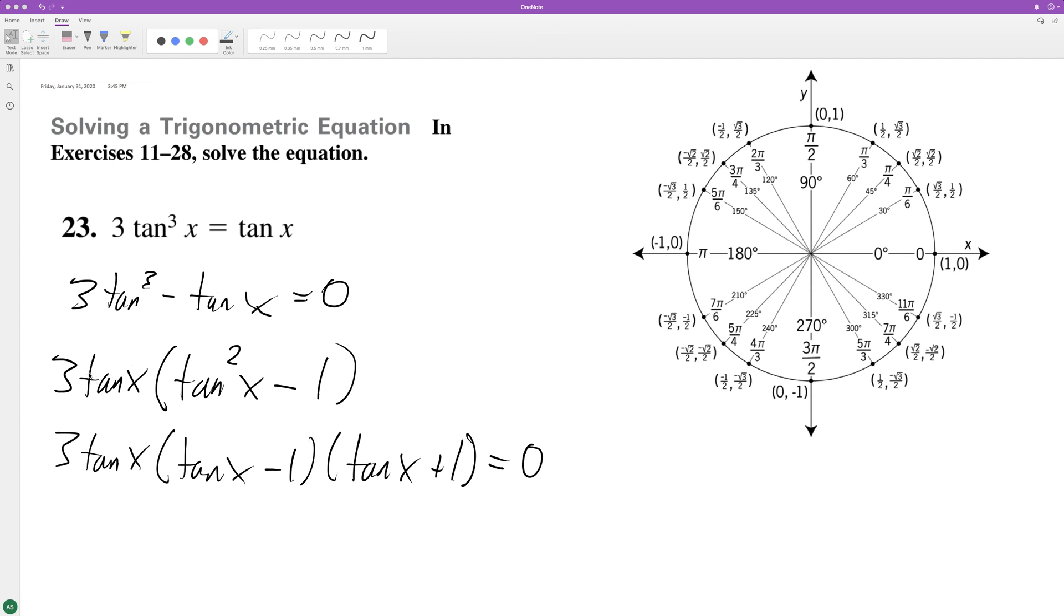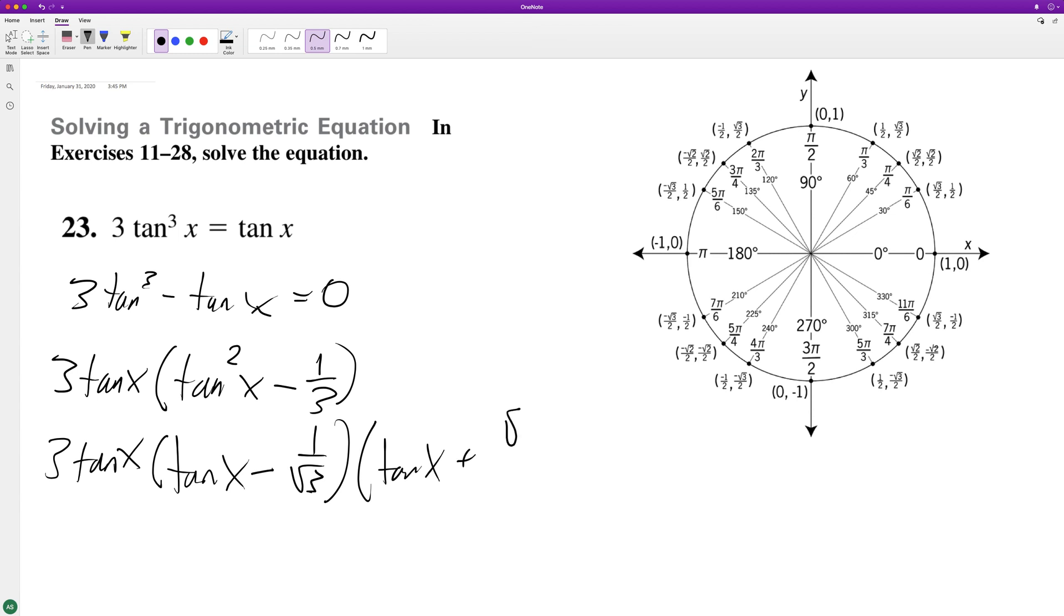I factored out a 3, and actually I made a mistake. It should be tangent squared minus 1/3. So we're going to get 3tan(x) times (tan(x) - 1/√3) times (tan(x) + 1/√3).